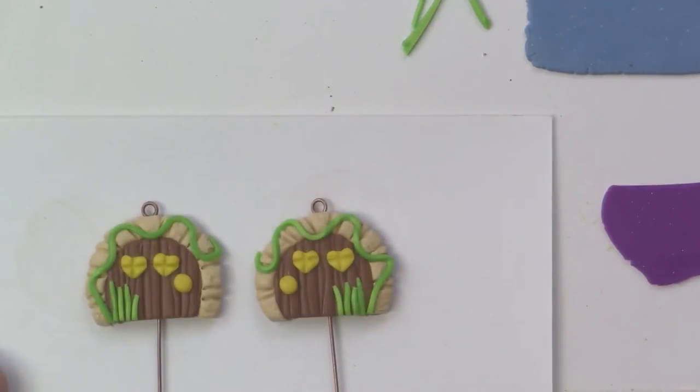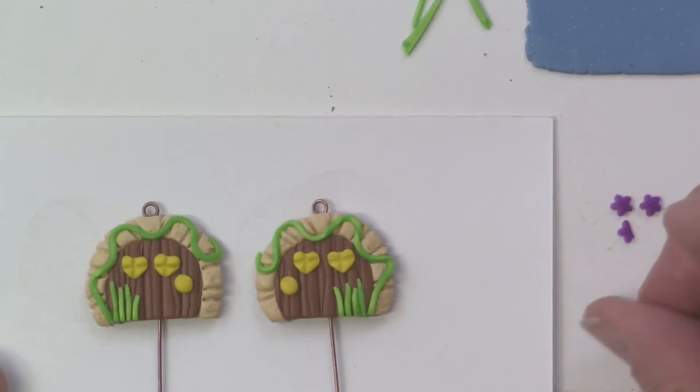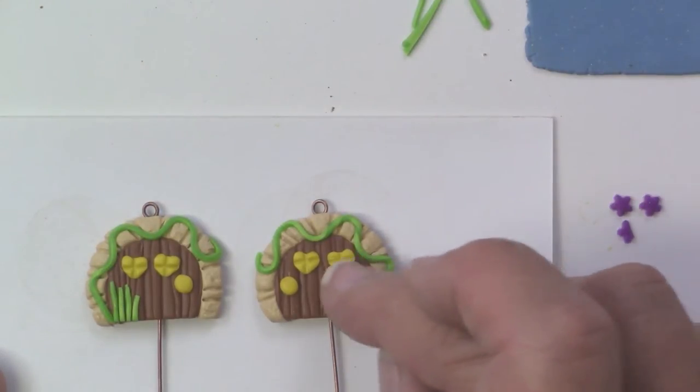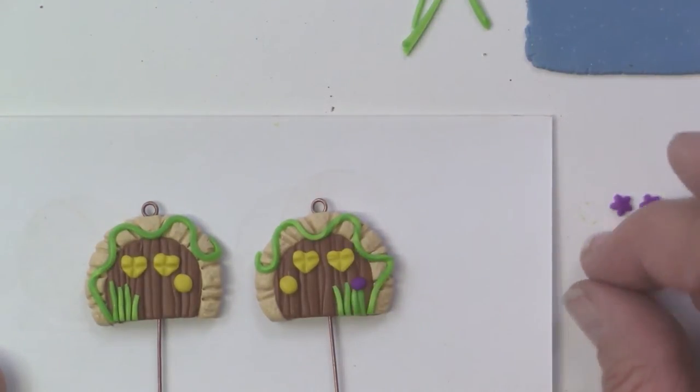I'm going to take a little bit of this deep purple clay and use one of my small cutters to cut out some little shapes. I'm going to roll those up and these are going to simulate some flowers in the garden. They might be tulips or something like that. I'm just cutting a little piece and rolling it into a little ball and putting a few of those for little flowers in the garden.